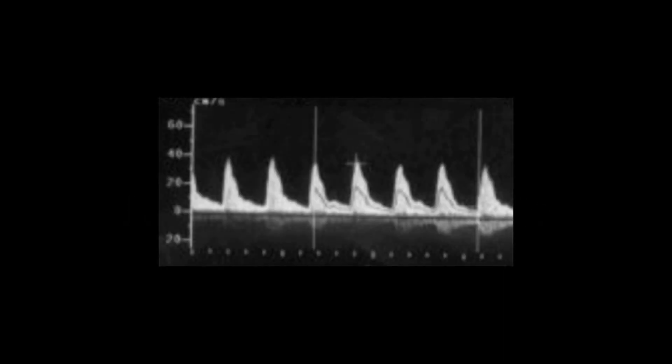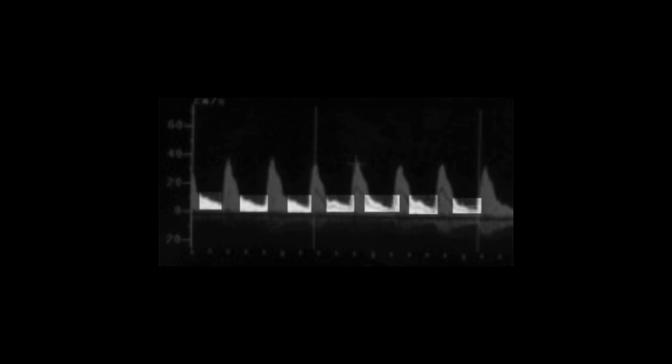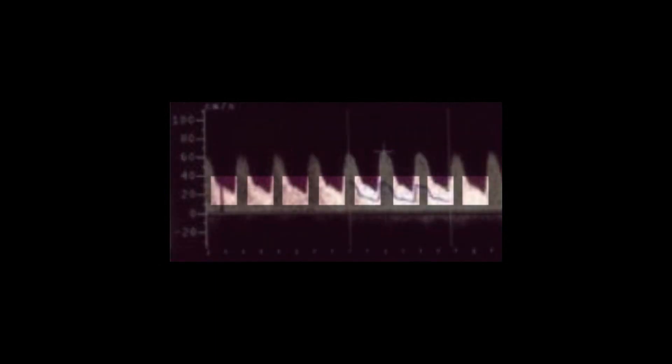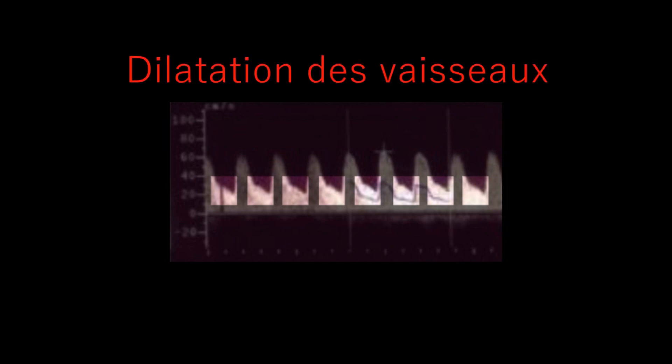Quand un fœtus est en souffrance, il modifie systématiquement le Doppler à l'artère ombilicale. Au bout d'un moment, il adapte sa circulation interne en privilégiant le cerveau et le cœur. C'est pourquoi il est également intéressant de réaliser l'examen pour l'artère cérébrale du fœtus si celui des artères ombilicales est anormal. Voici le Doppler normal de l'artère cérébrale, avec un pic de systole et un plateau en diastole. En opposition, voici celui d'un cas pathologique : le pic de systole persiste, mais le niveau de la diastole est augmenté. En cas de souffrance, les vaisseaux du fœtus vont se dilater pour maximiser les apports au niveau des organes nobles.